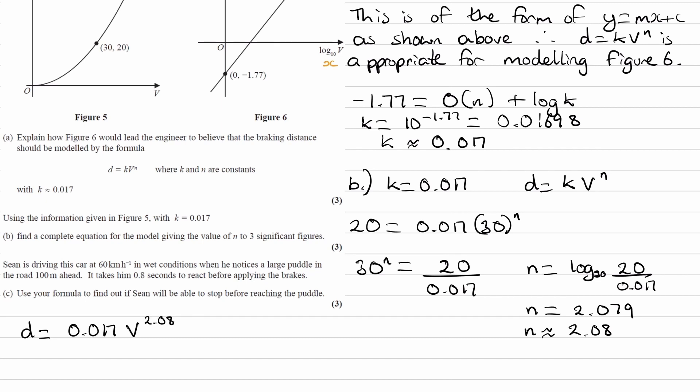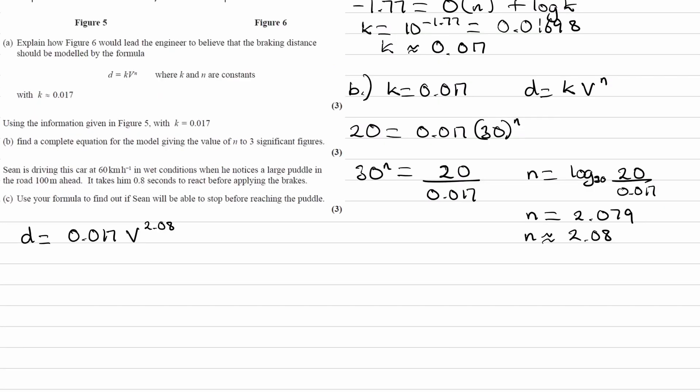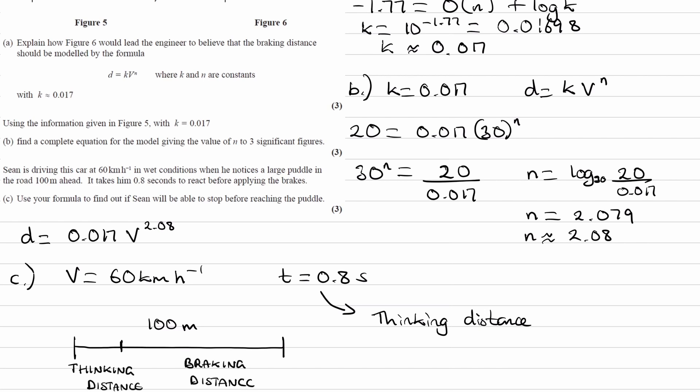So onto part c. We have a speed that Sean is driving his car at, 60 kilometers per hour. We know that it takes 0.8 seconds to react before he applies the brakes, so this will lead us to a thinking distance. We know the total distance is 100 meters. So this whole thing is 100 meters, and that's split into two parts: we have a thinking distance and then we have a braking distance.